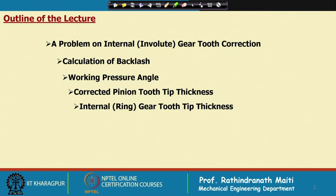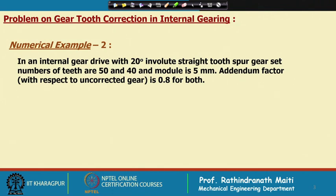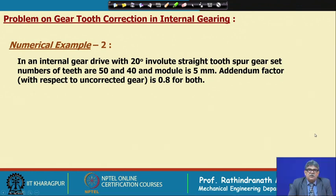We will find the corrected pinion tooth tip thickness, internal ring gear tooth tip thickness, and when gear correction is given, the addendum is usually truncated or increased. It is also essential to calculate the contact ratio. The problem involves an internal gear drive with a 20-degree involute straight tooth spur gear set, number of teeth 50 and 40, module 5 millimeter, and addendum factor 0.8 for both gears.